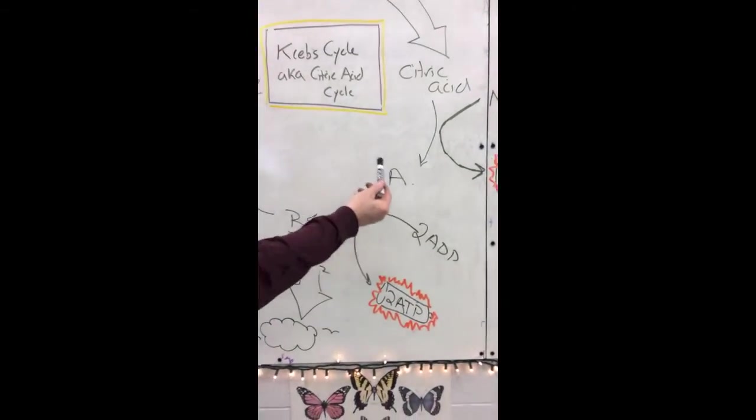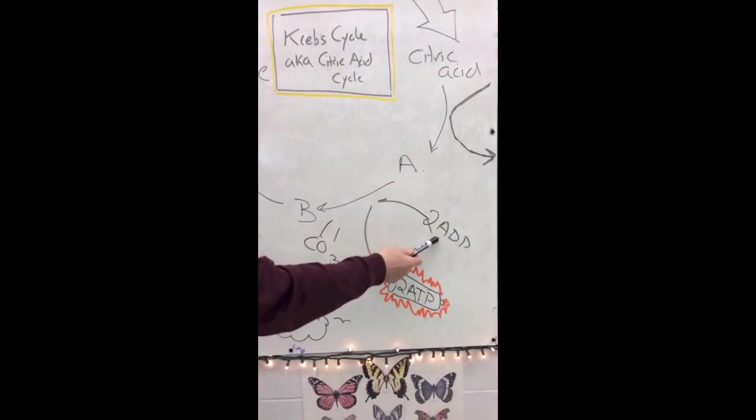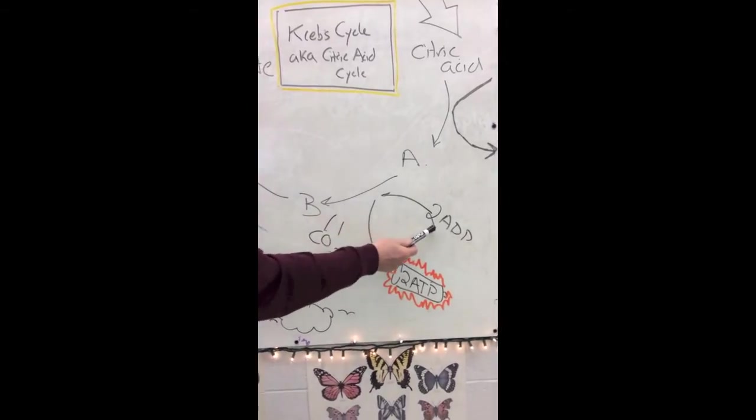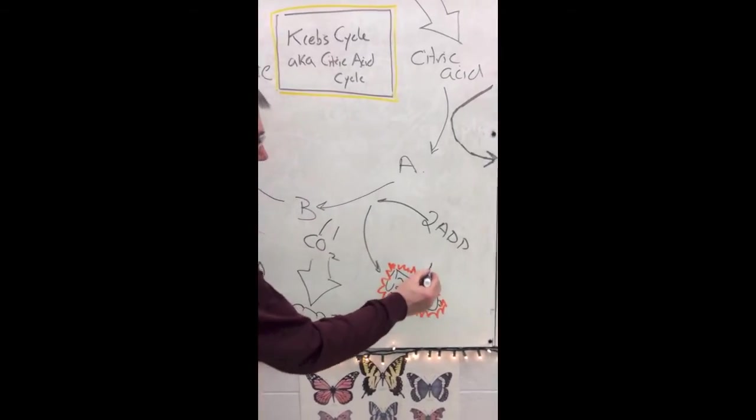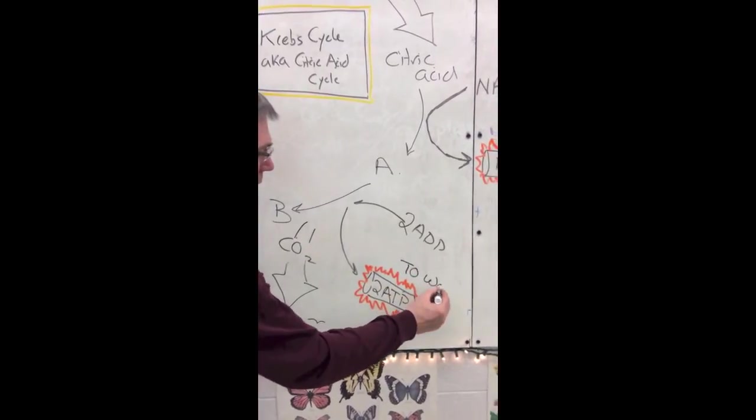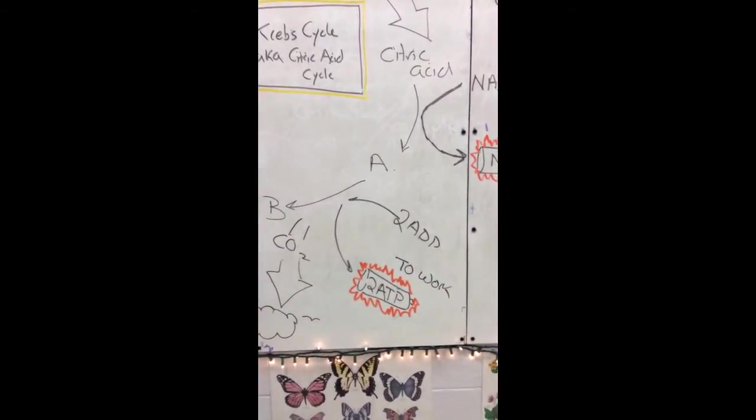As various intermediaries are formed, other low energy molecules are charged up. For instance, two ADPs are charged up to form two ATPs, and these are sent off to perform whatever work the cell needs to have done.